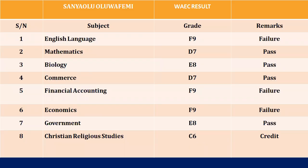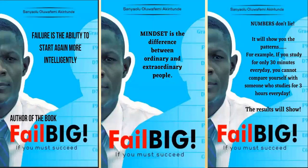This is my wife's result — I include it in all my courses to encourage you and show that accounting can be very easy. Going from F9 to first class shows that there's so much you can learn regardless of your background. Failure is the ability to start again more intelligently. Your mindset is the difference between ordinary and extraordinary people. Practice daily — even 30 minutes every day adds up, and the results will always show.